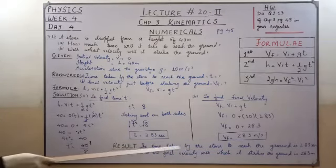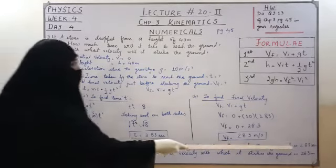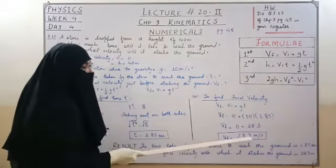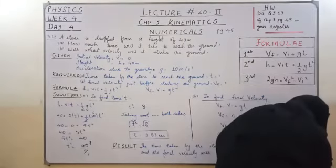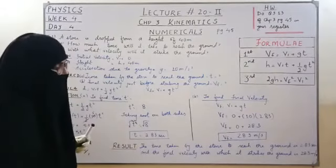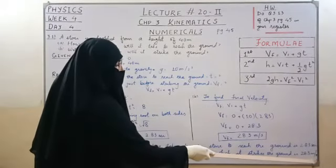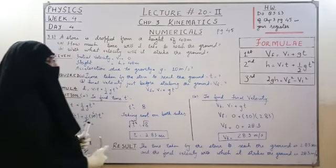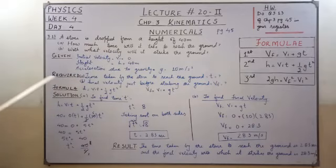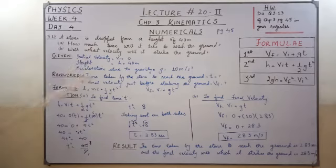So the time taken by the stone to reach the ground is 2.83 seconds and the final velocity with which it strikes the ground is 28.3 meter per second. You must also check and verify your answers. You will have to write the solution in your fair registers in neat and clean work, okay?